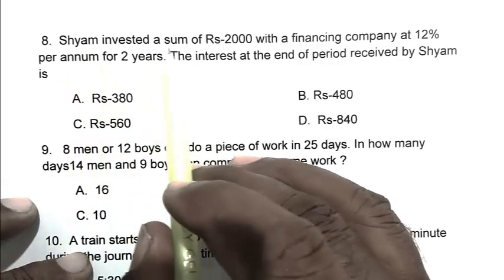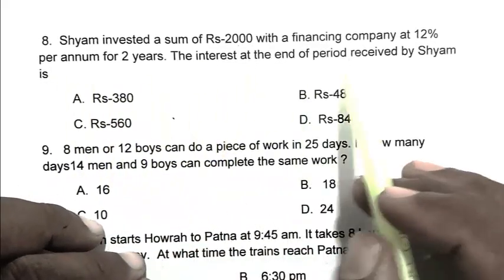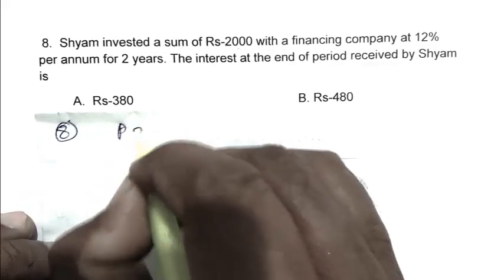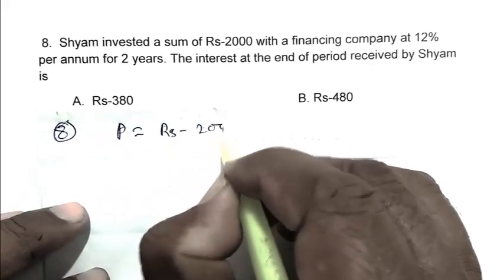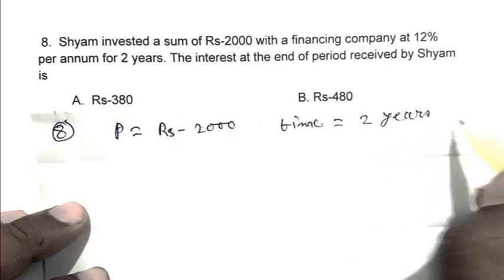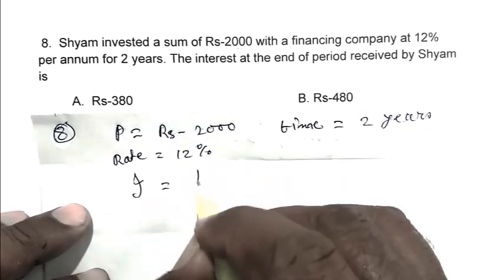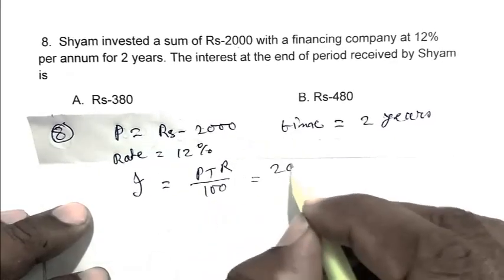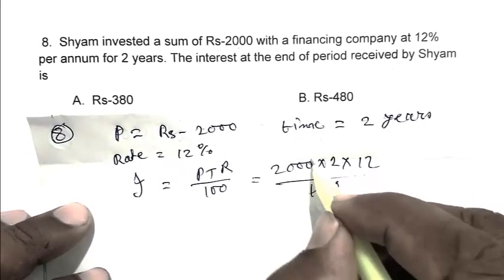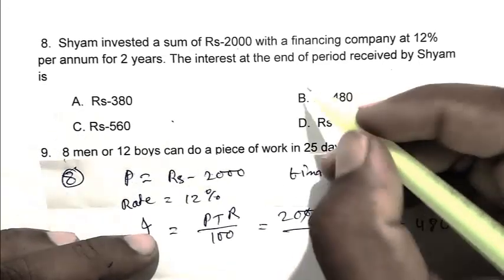Question number eight: Shyam invested Rs.2000 with a financing company at 12% per annum for 2 years. The interest at the end of the period received by Shyam is calculated by the formula: Interest equals PTR by 100. Principal is 2000, time is 2 years, rate is 12%. So 2000 times 2 times 12 by 100 equals 480. B is the right answer.